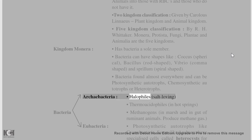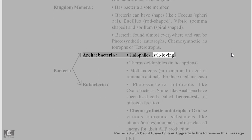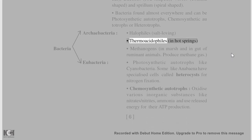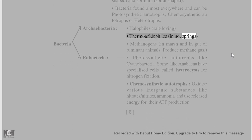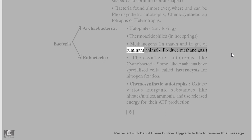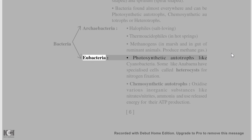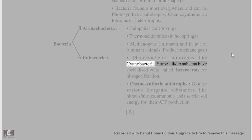Archaebacteria include halophiles (salt-loving), thermoacidophiles (in hot springs), and methanogens (in marshes and in the gut of ruminant animals), which produce methane gas. Photosynthetic autotrophs among bacteria include Cyanobacteria.